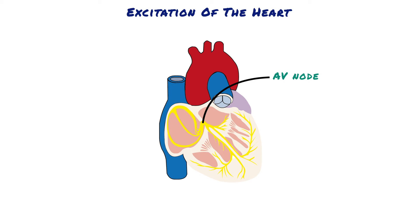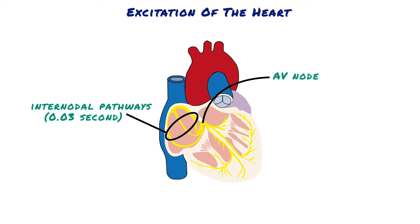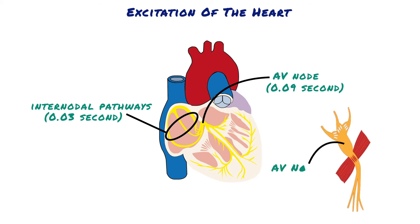The impulse, after travelling through the internodal pathways, reaches the AV node about 0.03 seconds after its origin in the sinus node. Then there is a delay of another 0.09 seconds in the AV node itself before the impulse enters the penetrating portion of the AV bundle where it passes into the ventricles. A final delay of another 0.04 seconds occurs mainly in this penetrating AV bundle, which is composed of multiple small fascicles passing through the fibrous tissue separating the atria from the ventricles.